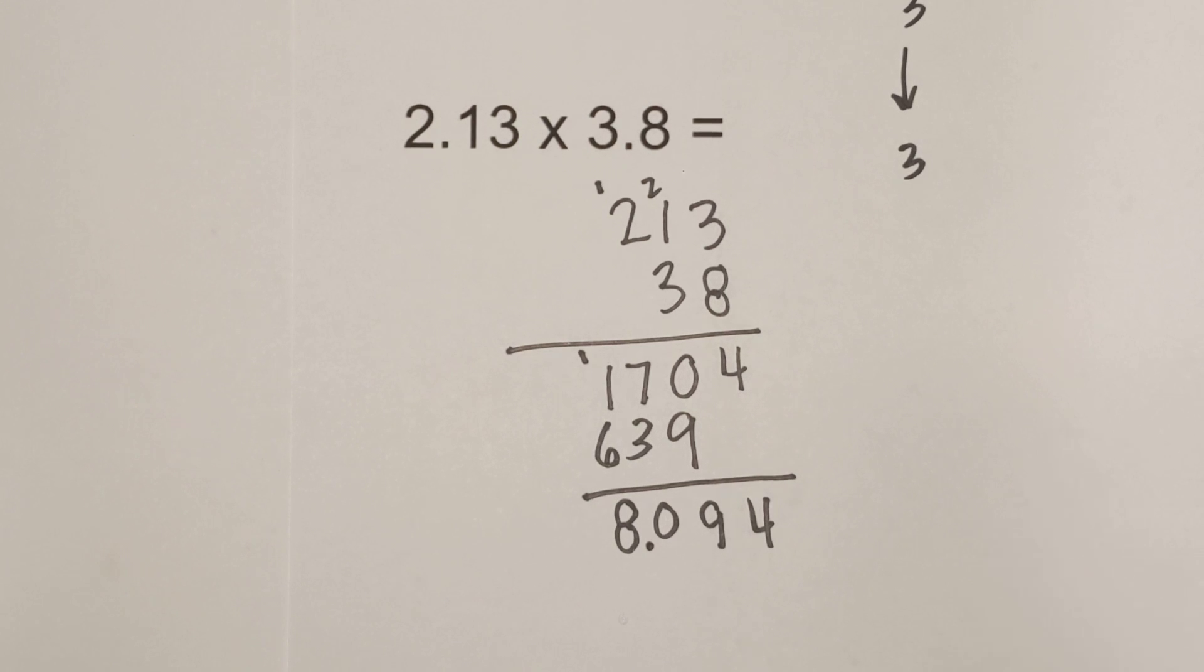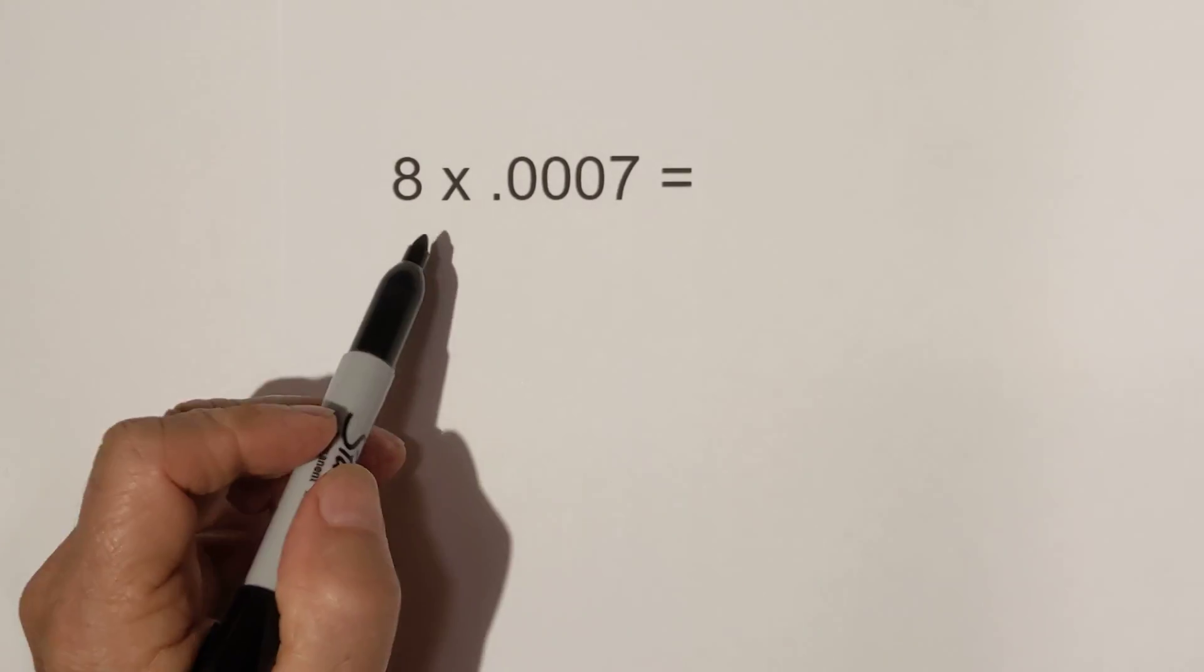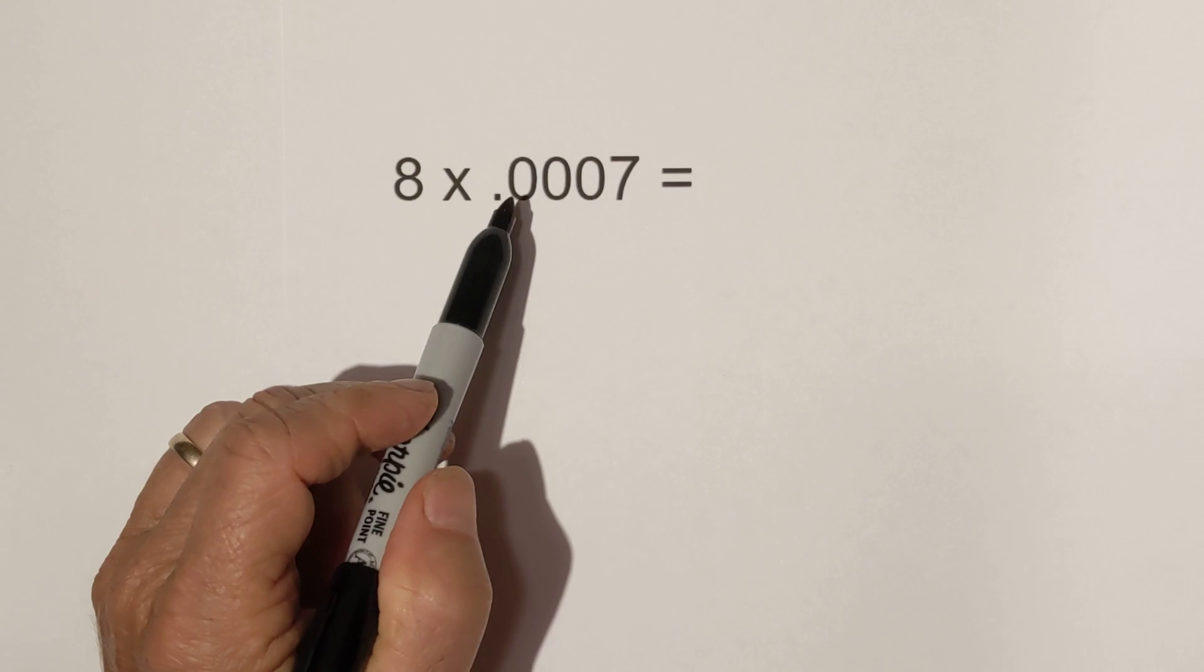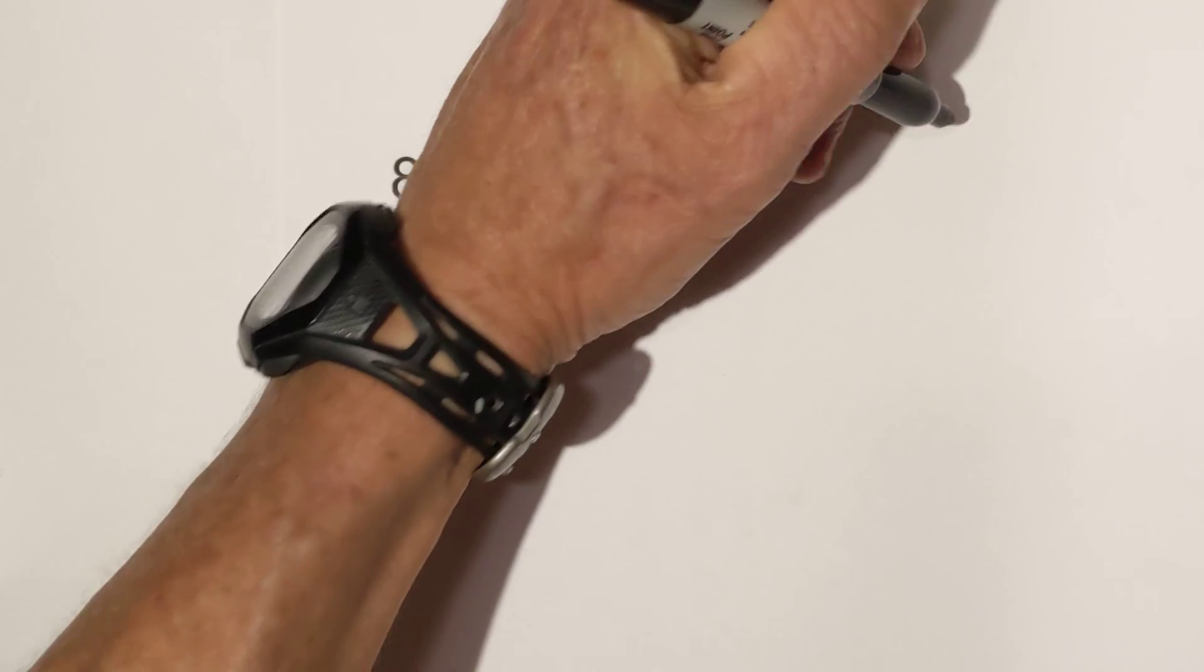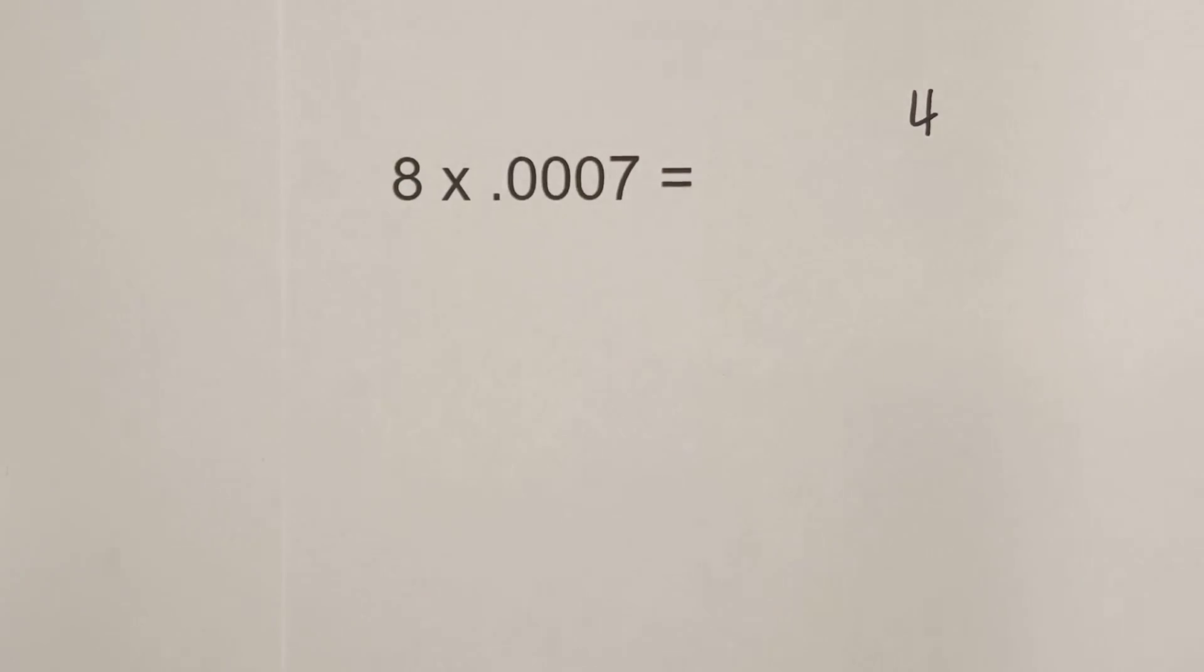Let's work one more example. Okay, step one. Let's count how many are to the right of the decimal. We have 1, 2, 3, 4. I'll write the 4 right there just to show you.